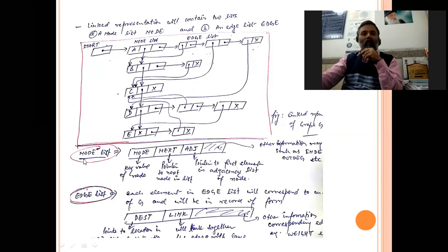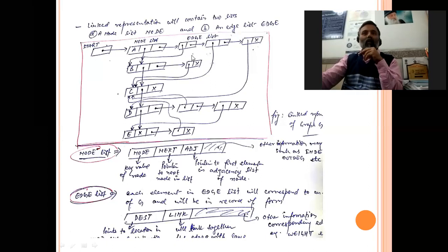Each node in the node list has three fields: the key value of the node, a pointer to the next node in the node list, and a pointer to the first element in the adjacency (edge) list. Additional information like in-degree and out-degree can also be maintained. Each entry in the edge list has a first field for the destination node address, a second field for the address of the next edge entry, and additional fields for weight or other edge information.